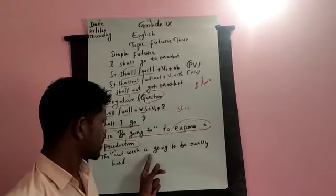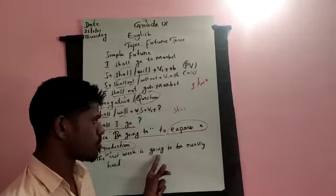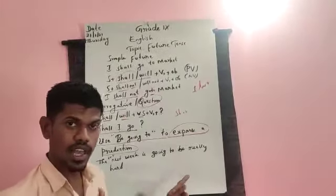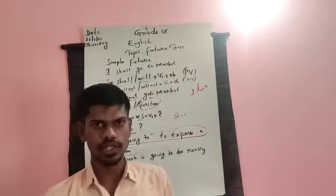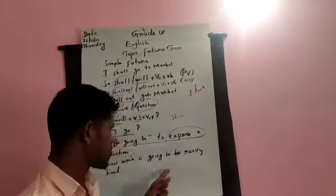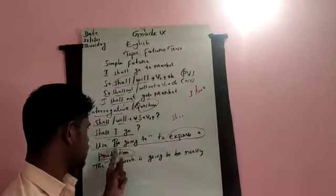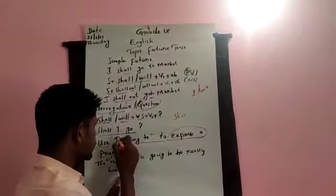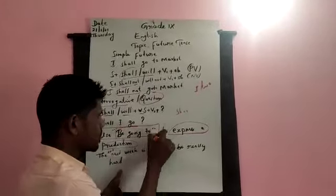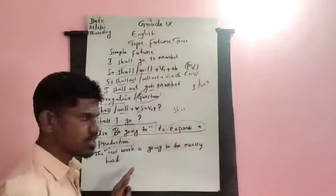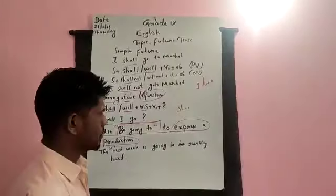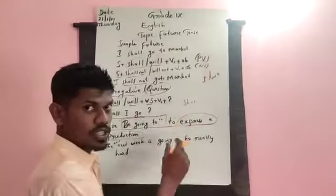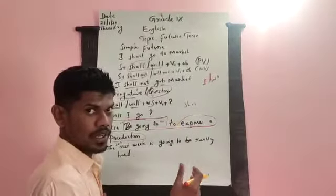'Today evening is going to be having rain.' That means the action is going to happen in the future. At that time you can use 'be going to.' This 'be going to' is the indication for simple future — it can express a prediction of something that is going to happen.